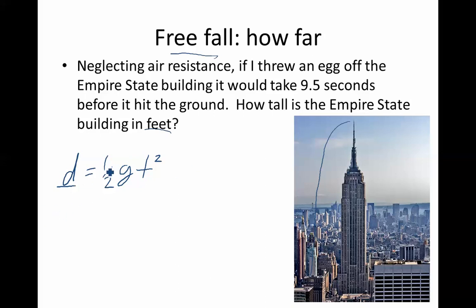Distance equals one half g times t squared. We're looking for how tall it is. We're looking for the distance. I'm just going to put down one half times 9.8 meters per second squared times time. The time would be 9.5 seconds.